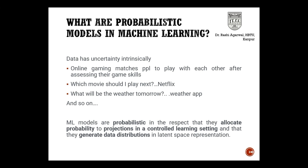Let us understand the meaning of this definition. We are allocating probability to projections in a controlled learning setting. Let us take an example of Netflix — this is a controlled learning setting of the app, and it is making projections of each and every movie on its platform to be played by you. So it is allocating a probability to projections in that particular environment.